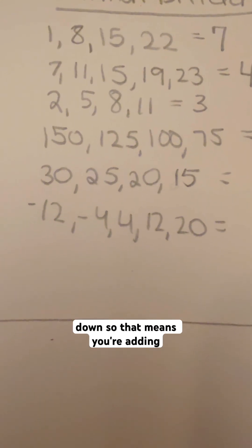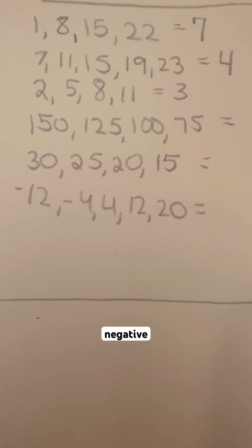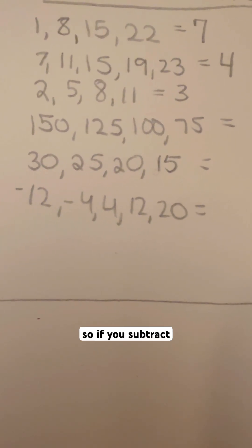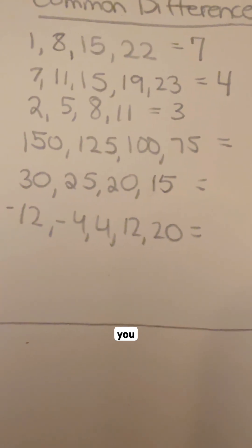Now the next one is going down, so that means you're adding a negative number. So you're going from 150 to 125, so if you subtract 125 from 150, you get 25.